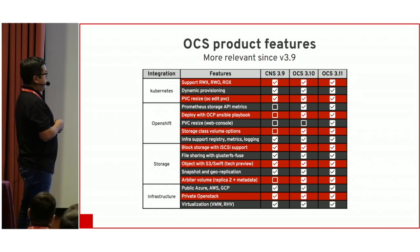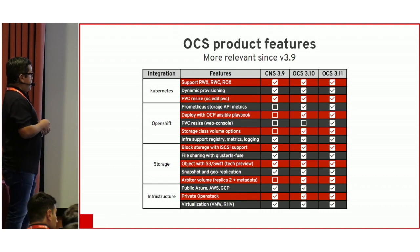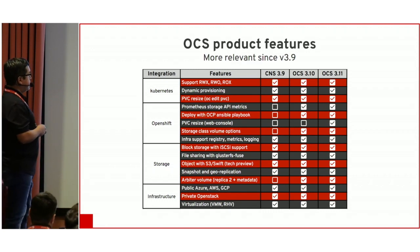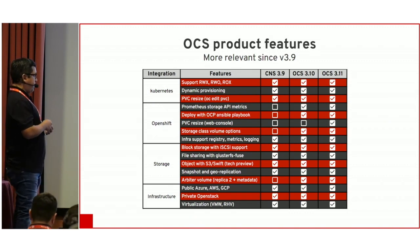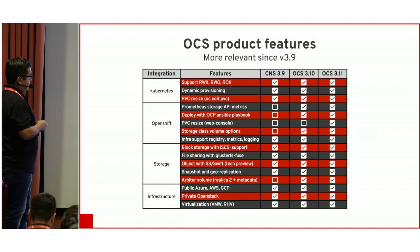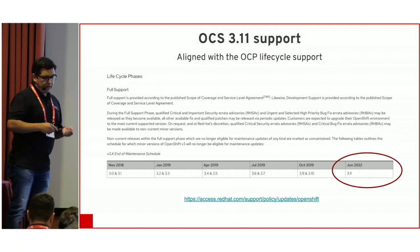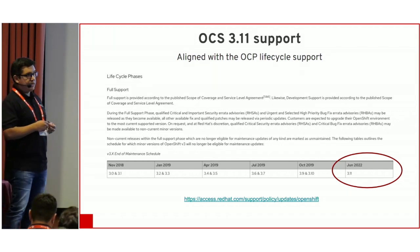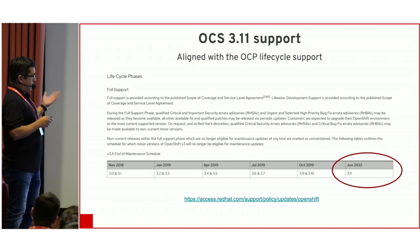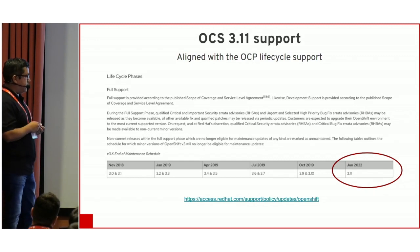Regarding Kubernetes integration, we support block, file, and object storage, plus read-write-many, read-write-once, read-only, dynamic provisioning, and PV resize. From an OpenShift point of view, in the last version you can manage storage directly from the web console and install it from the same playbook used to install OpenShift. Storage services include multi-protocol storage, snapshots, and geo-replication for DR. The solution is infrastructure-agnostic — it runs everywhere OpenShift runs. OCS 3 version 3.11 is aligned in support lifecycle with OpenShift, and there is a public reference link for the support lifecycle details.